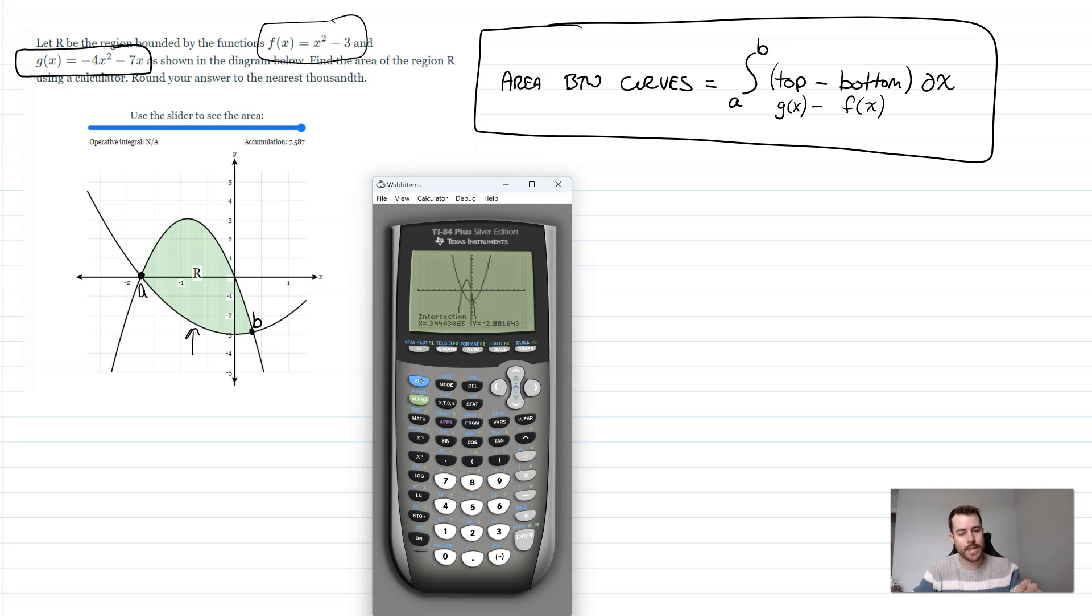So again, I'm going to store that. I'm going to quit out of this. I'm going to hit store. And now I'm going to go to B here. So alpha and then apps for B. So now again, anytime I type in B, it will be this number.